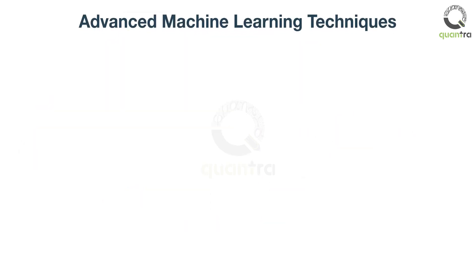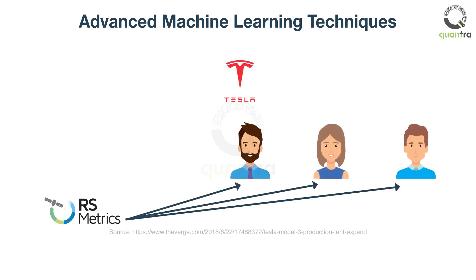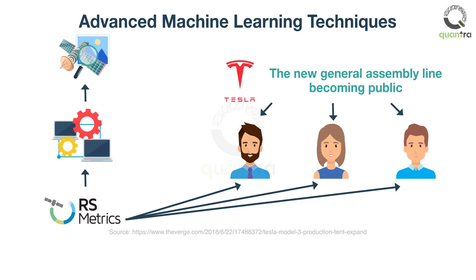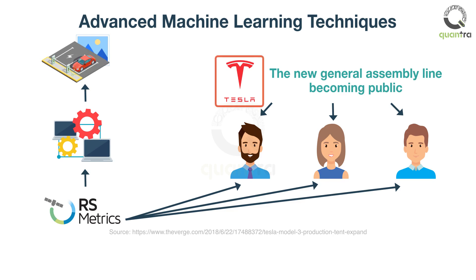In June 2018, a New York-based firm RS Metrics informed its clients about Tesla's car manufacturing activities three days prior to the news about the new general assembly line becoming public. RS Metrics used advanced machine learning techniques to analyze the satellite imagery, then sold the information thus obtained to its clients. RS Metrics analyzed the images of Tesla's car parking lot and concluded that these could be the new assembly line in talks. Thus they promoted Tesla based on the car counts from the images.